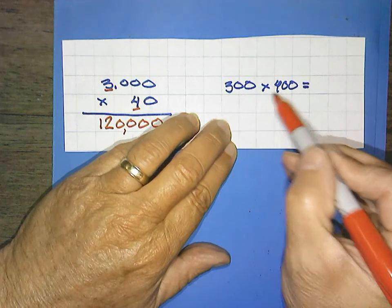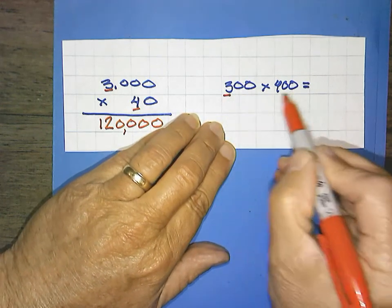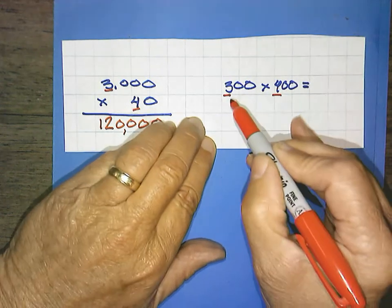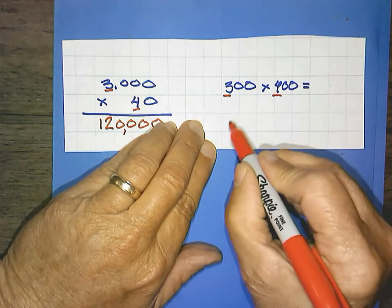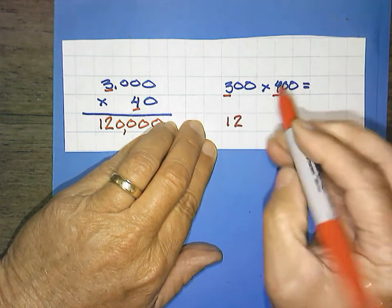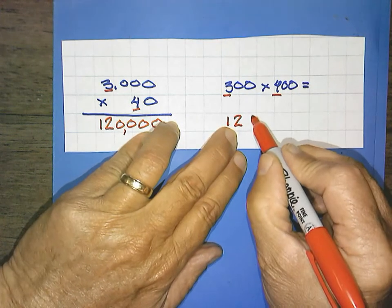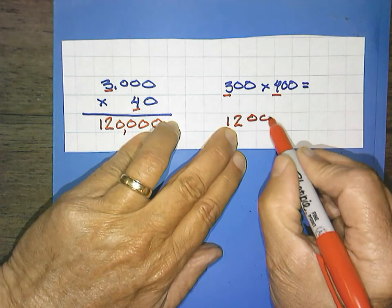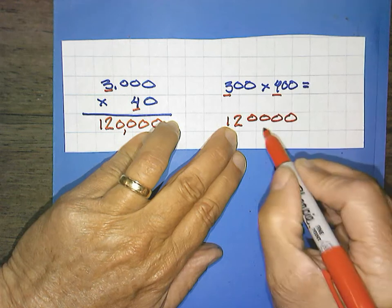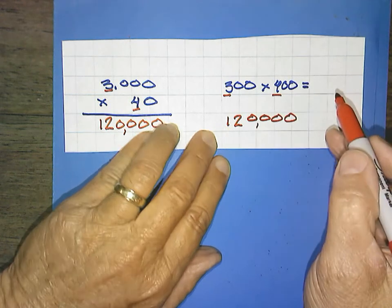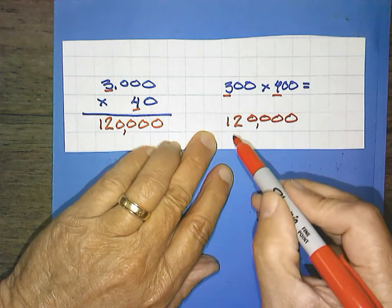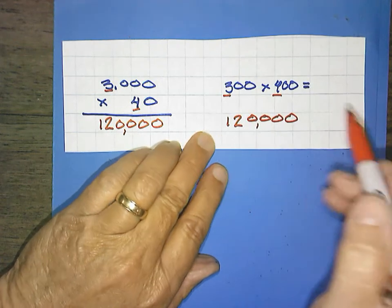300 times 400. Your solid numbers are 3 times 4. It would equal 12. Count your zeros. 1, 2, 3, 4. And write your zeros. 1, 2, 3, 4. And we get, also interesting, 120,000.